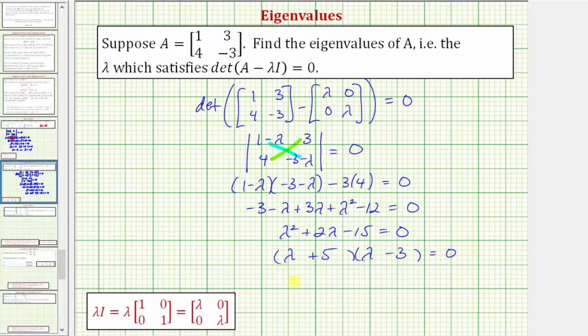This product equals zero when lambda equals negative five, or when lambda equals positive three. So these are the eigenvalues of the given matrix A.